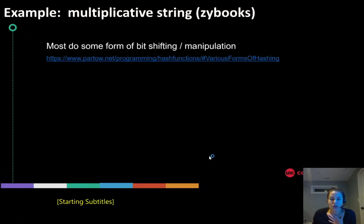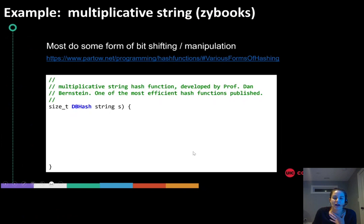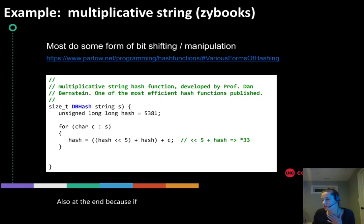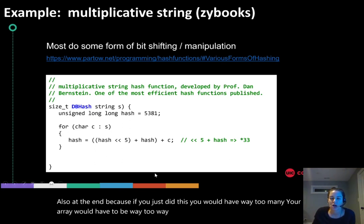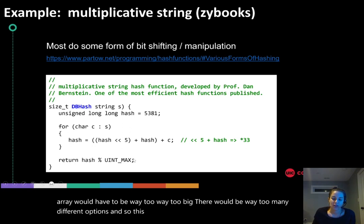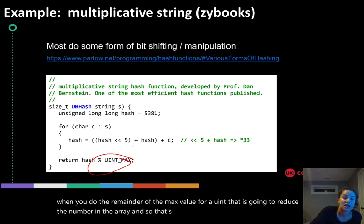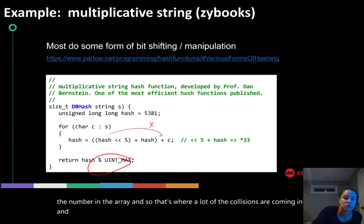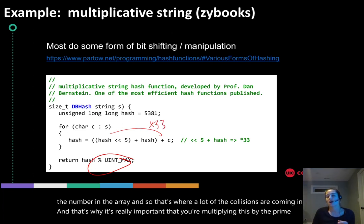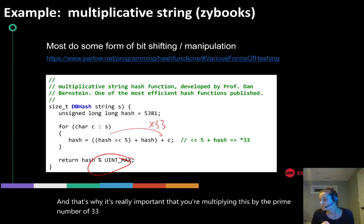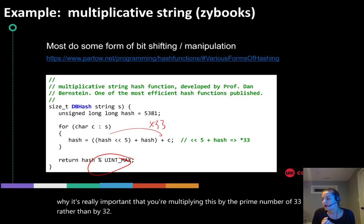The reason that you see so many collisions is because if you just did this you would have way too many—your array would have to be way too big. This is a case where the remainder comes in handy. When you do the remainder of the max value for a uint, that is going to reduce the number in the array. That's where a lot of the collisions are coming in, and that's why it's really important that you're multiplying this by the prime number of 33 rather than by 32.